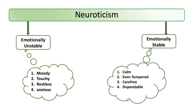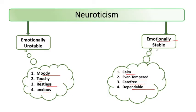Next unhone liya neuroticism. Neuroticism mein kya hota hai ki agar person high score karta hai, toh woh person emotionally unstable hota hai. Emotionally unstable ke characteristics jo unhone bataye hain — ki woh moody hota hai, touchy hota hai, restless rehta hai, aur anxious, har ek situation mein usko jaldi anxiety ho jaati hai. Iske doosri side par, agar person neuroticism mein kam score karta hai, toh woh emotionally stable rehta hai — calm rehta hai, even tempered, carefree aur dependable hote hain. Toh yeh tha unka neuroticism, second dimension — isme neurotic yaani emotionally unstable aur emotionally stable, do personality types.